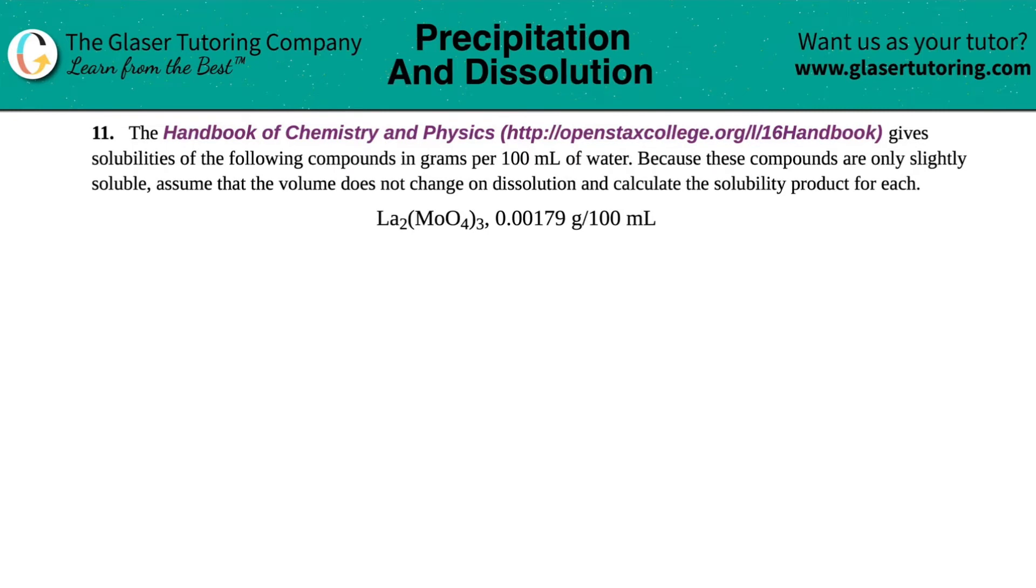Number 11, the handbook of chemistry and physics gives solubilities of the following compounds in grams per 100 milliliters of water. Because these compounds are only slightly soluble, assume that the volume does not change on dissolution and calculate the solubility product for each. And then we have this ionic compound here, La₂MoO₄₃, with the solubility of 0.00179 grams in 100 milliliters of water. Now a lot of wording up top here to ask one question, which is just to calculate the solubility product.